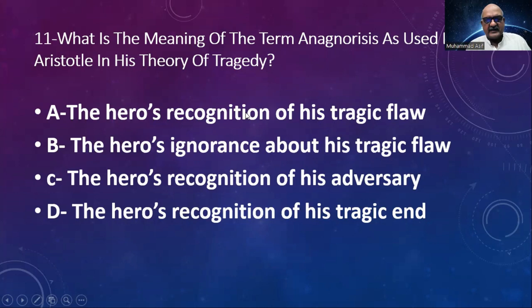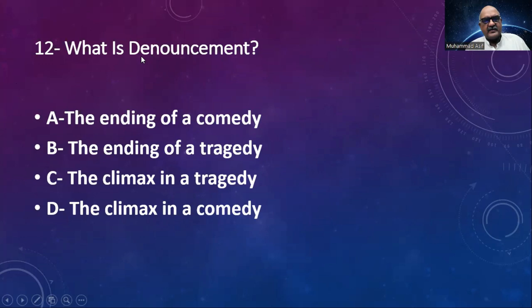What is 'dénouement'? It is actually a French word, spelled D-E-N-O-U-E-M-E-N-T. Options: the ending of a comedy, the ending of a tragedy, the climax in a tragedy, the climax in a comedy. The answer is the ending of a tragedy. So it is actually the anticlimax that is called dénouement.